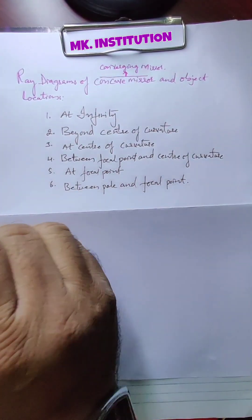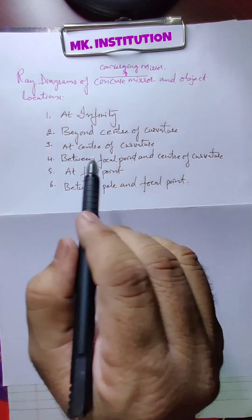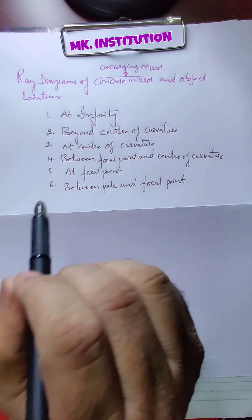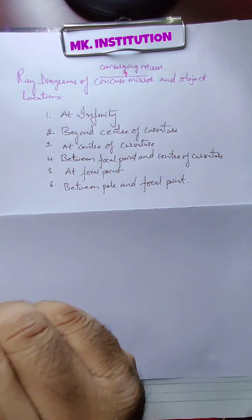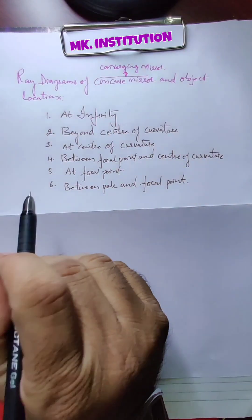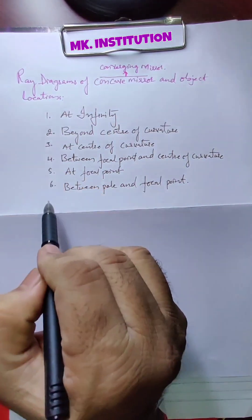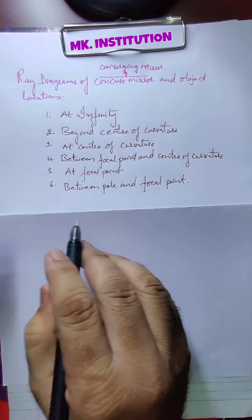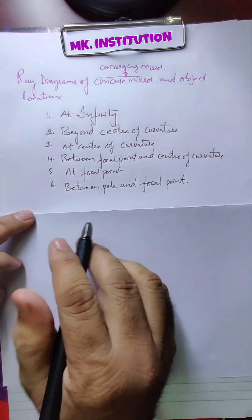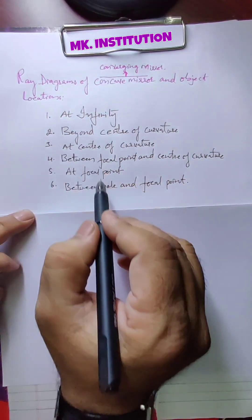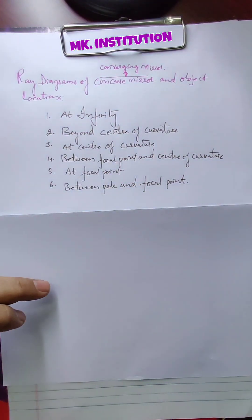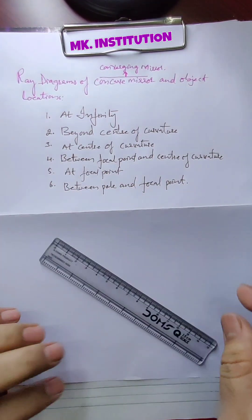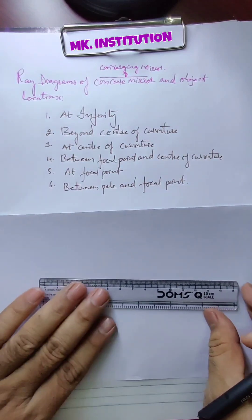Hello students, these are the ray diagram situations — the ray diagram of a concave mirror and object location. These are the six locations. With the diagram I will show you where each location will be.